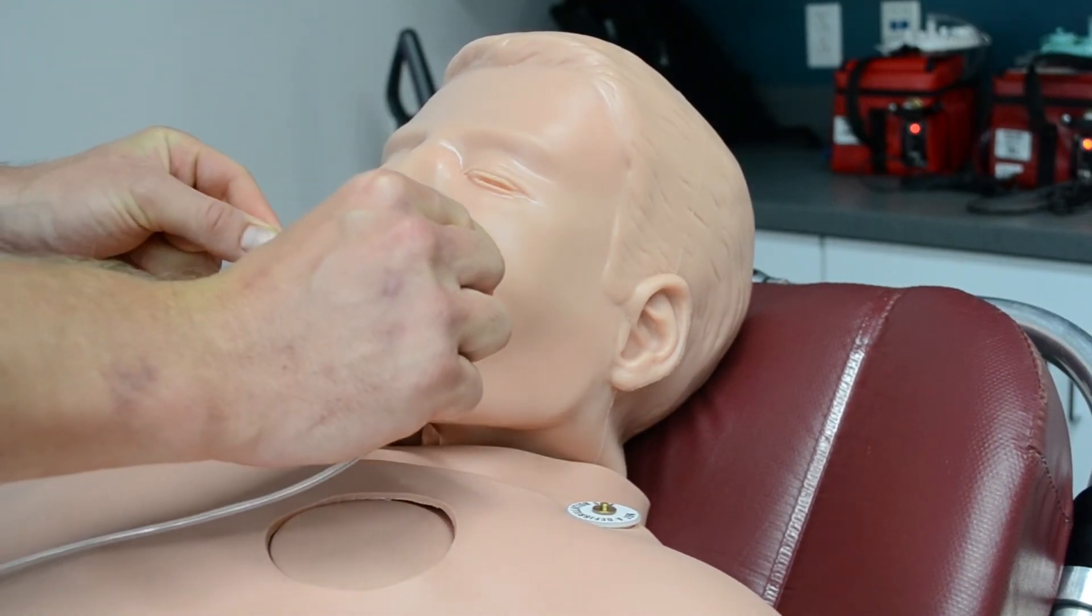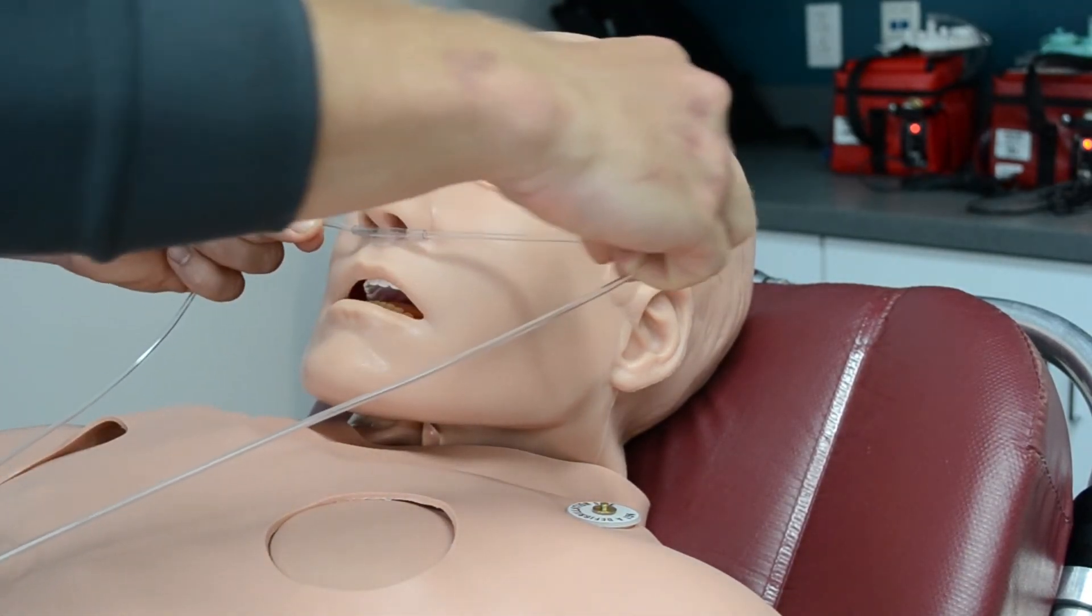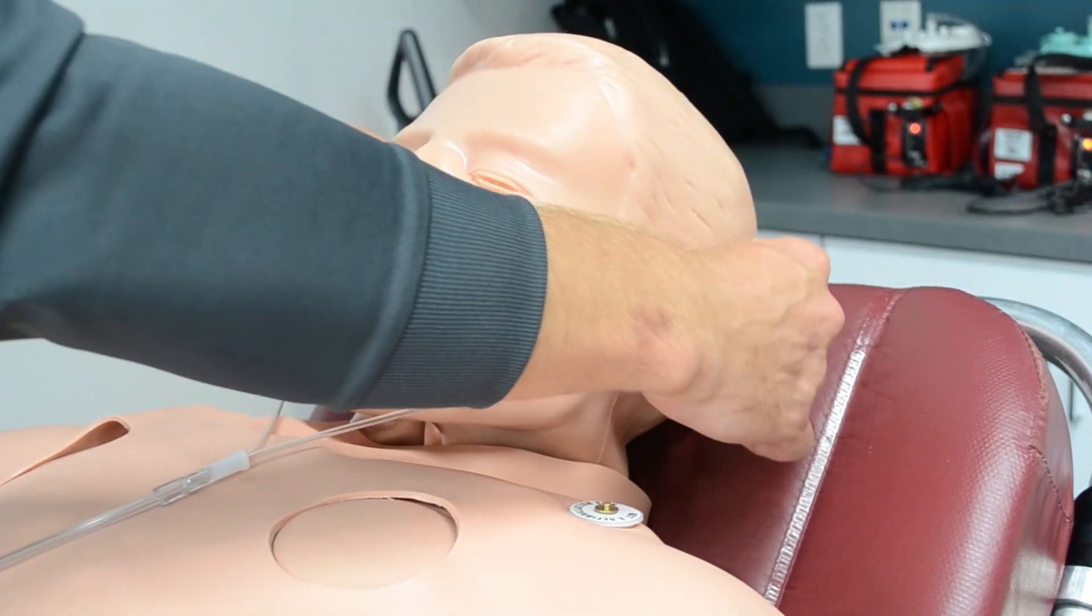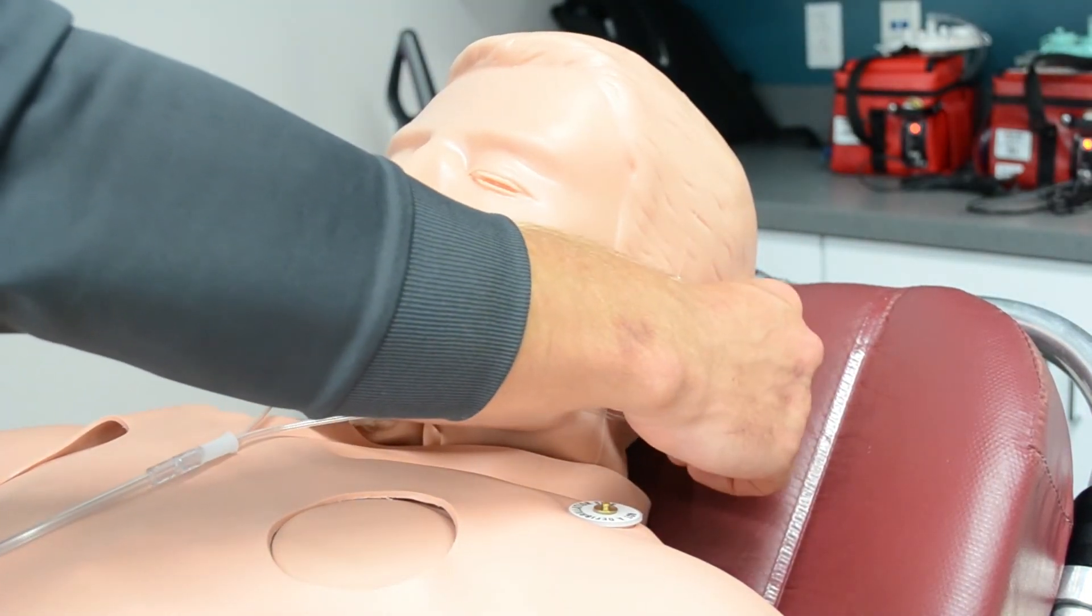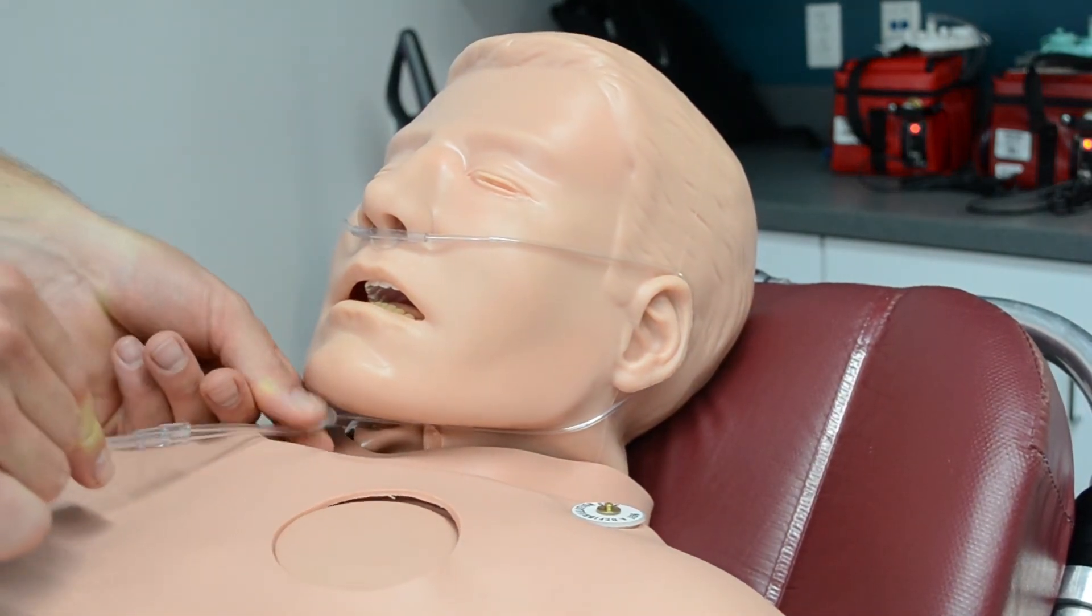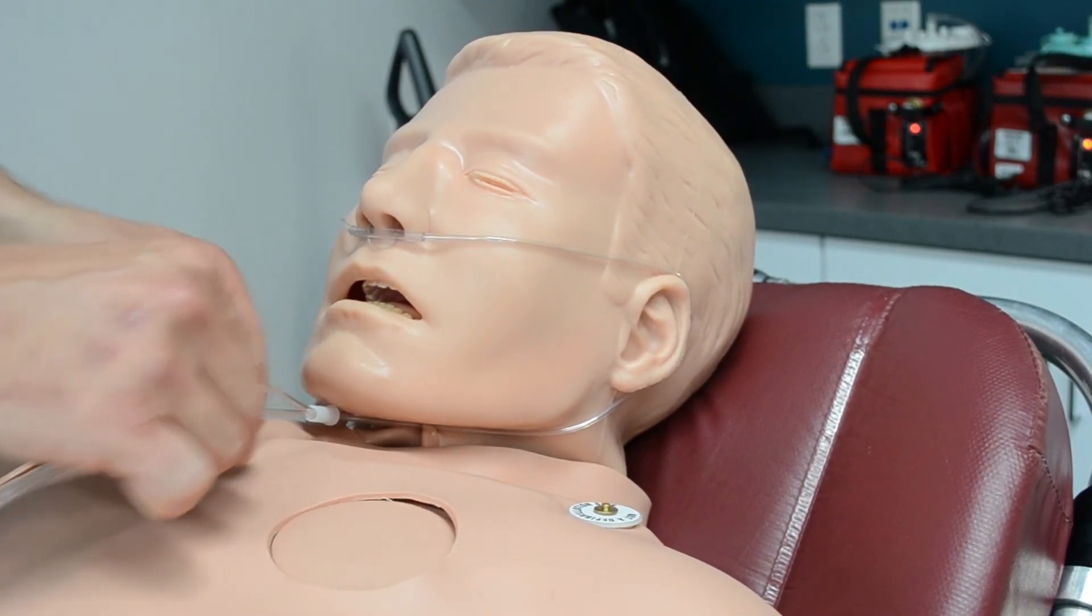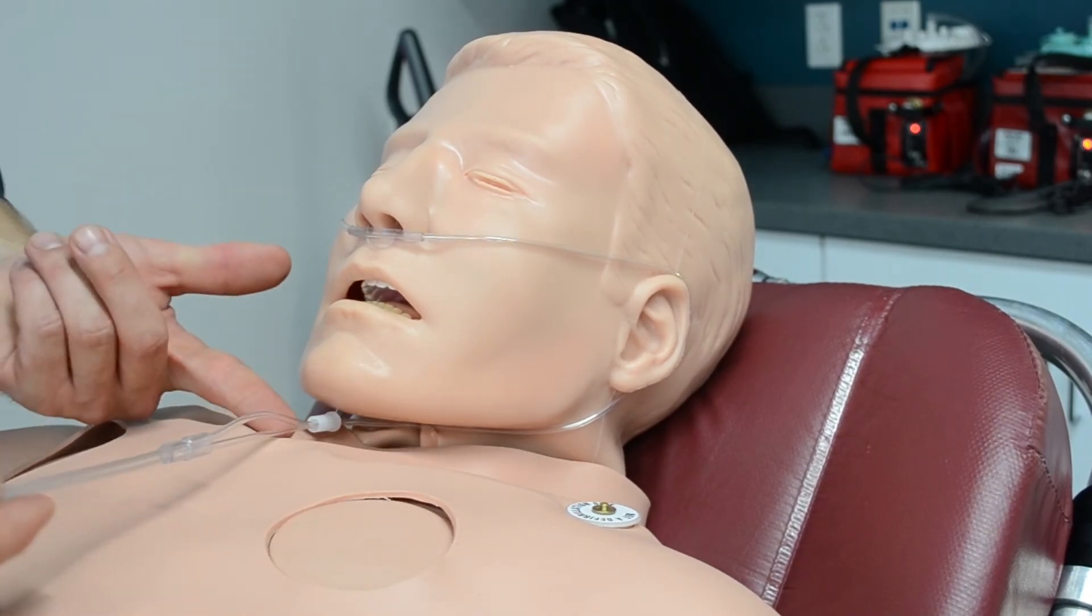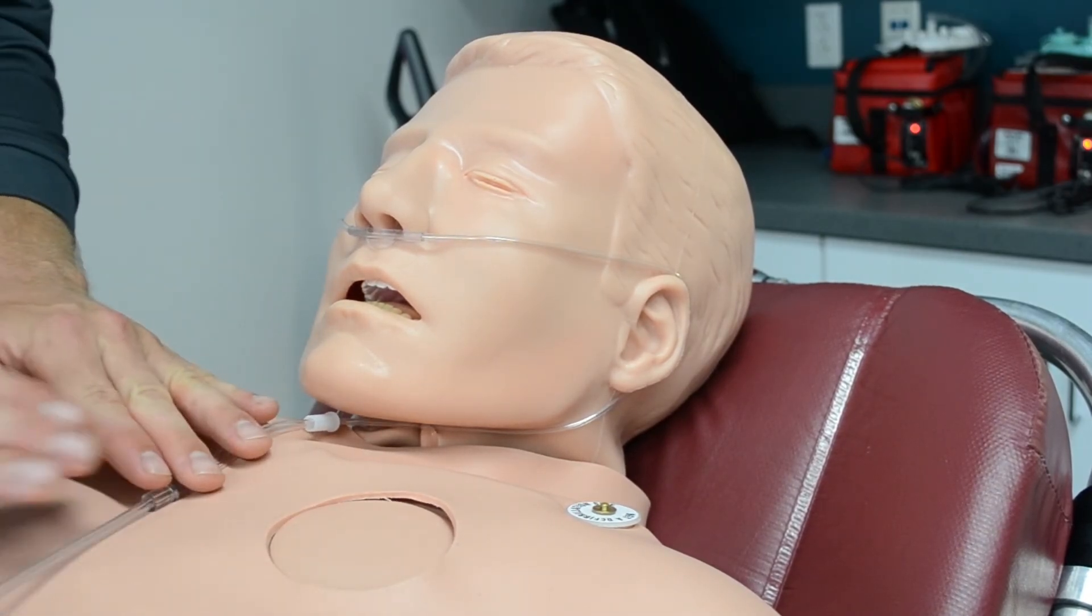Then loop around the ears and cinch down. The chin piece doesn't need to be too tight, just enough to keep it secure so that this O2 line is running down the anterior part of the patient.